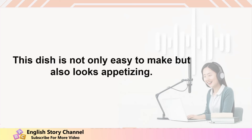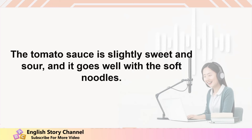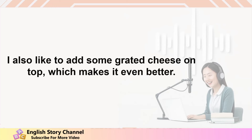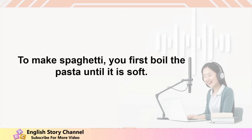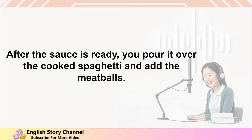This dish is not only easy to make, but also looks appetizing. The taste of spaghetti is what makes it special. The tomato sauce is slightly sweet and sour, and it goes well with the soft noodles. The meatballs are juicy and flavorful, making each bite a delicious experience. I also like to add some grated cheese on top, which makes it even better. To make spaghetti, you first boil the pasta until it is soft. While the pasta is cooking, you can prepare the sauce by heating tomatoes, garlic, onions, and spices in a pan. After the sauce is ready, you pour it over the cooked spaghetti and add the meatballs.